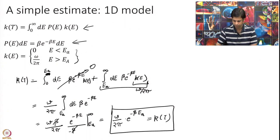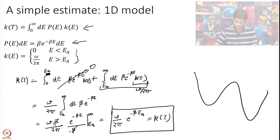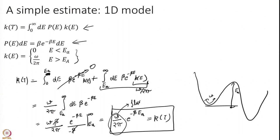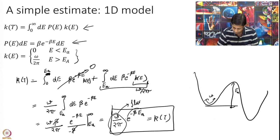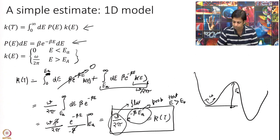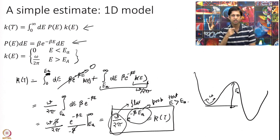This is a simple-minded but very physical result. I have a surface with frequency ω at the reactant minimum and an activation energy Ea. ω / 2π is my flux — the rate constant at which I traverse the transition state — multiplied by the probability that my energy is greater than Ea (in 1D). It is as simple as that, and that is my rate constant.